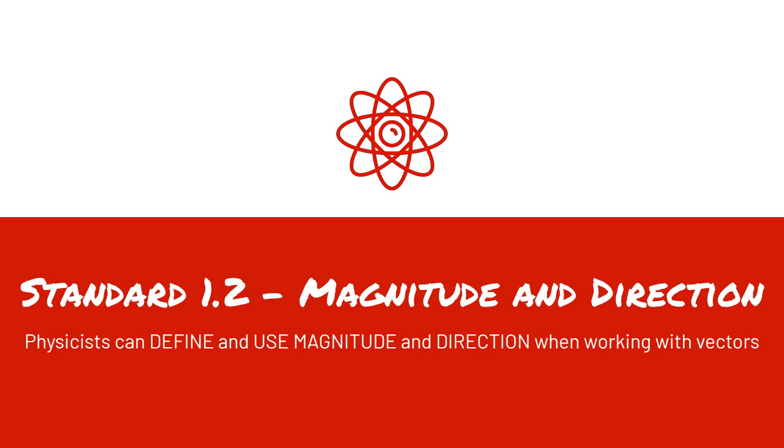Standard 2 in the first unit: magnitude and direction. Our learning objective is physicists can define and use magnitude and direction when working with vectors.